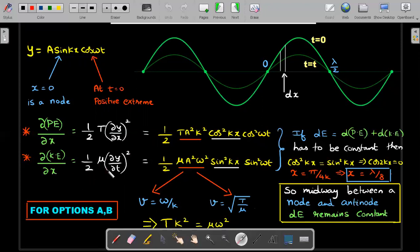If I differentiate, simple differentiation yields this function. You can see there's a position variation and time variation. Similarly, ∂KE/∂x, which is mu times velocity squared, gives you this function.